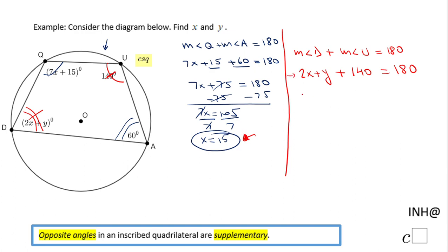We're going to have 2 times 15 plus y plus 140 equals 180. That will be 30 plus y plus 140 equals 180. We're going to combine these two numbers on the left side, so we have y plus 170 equals 180.